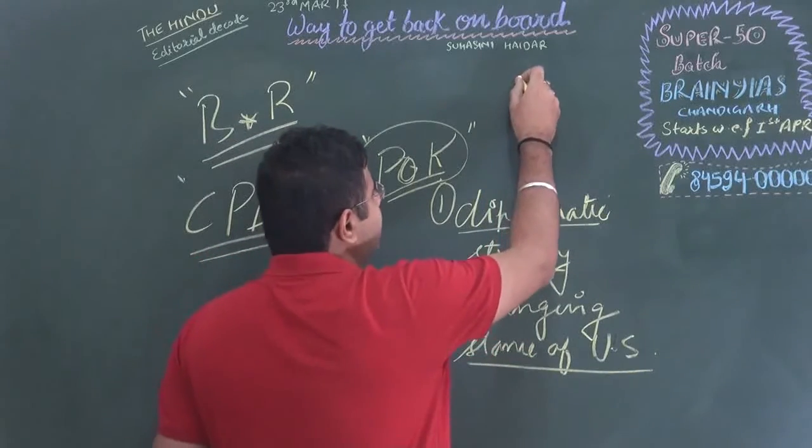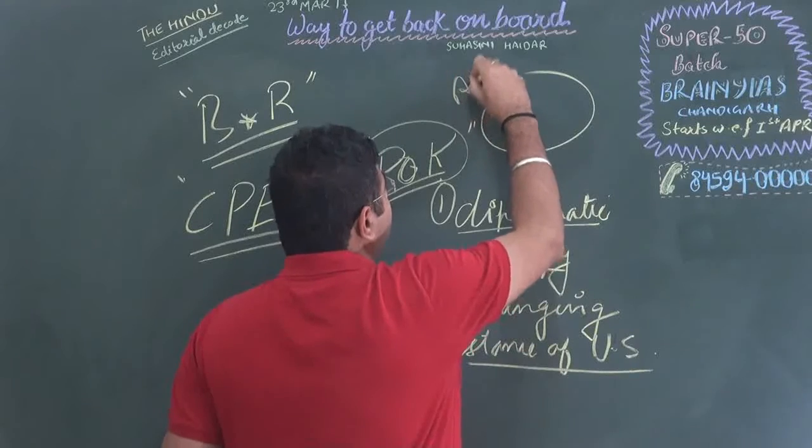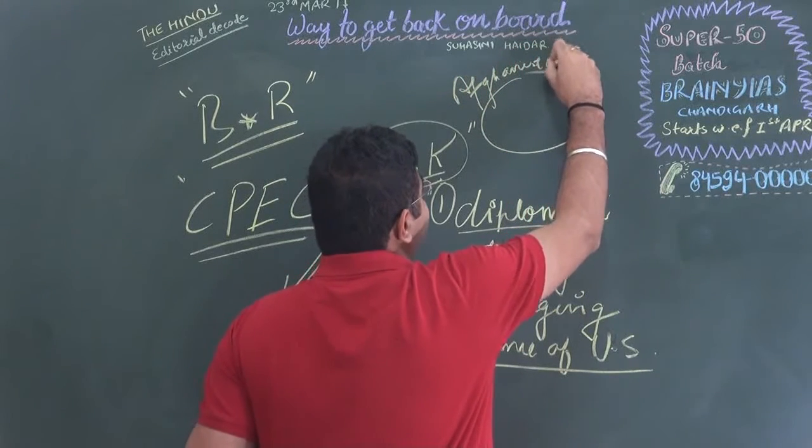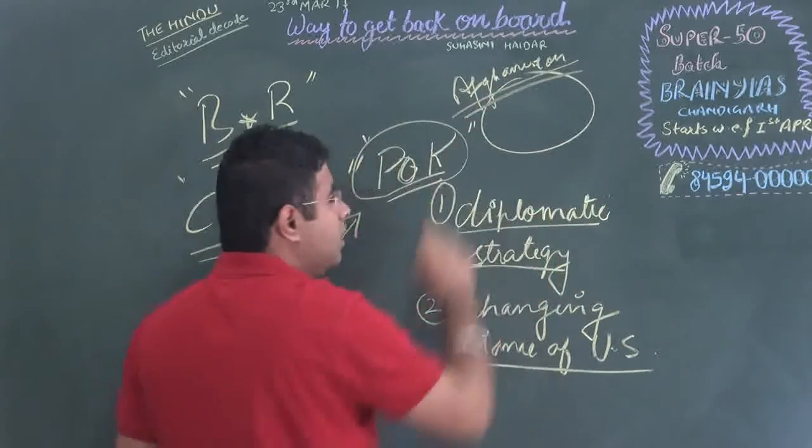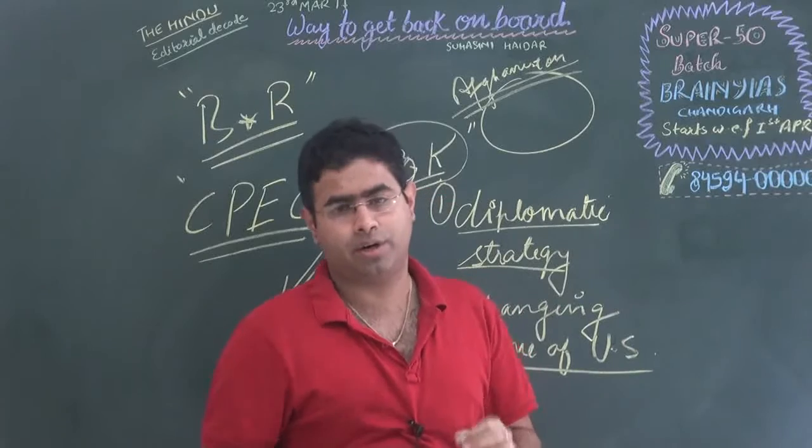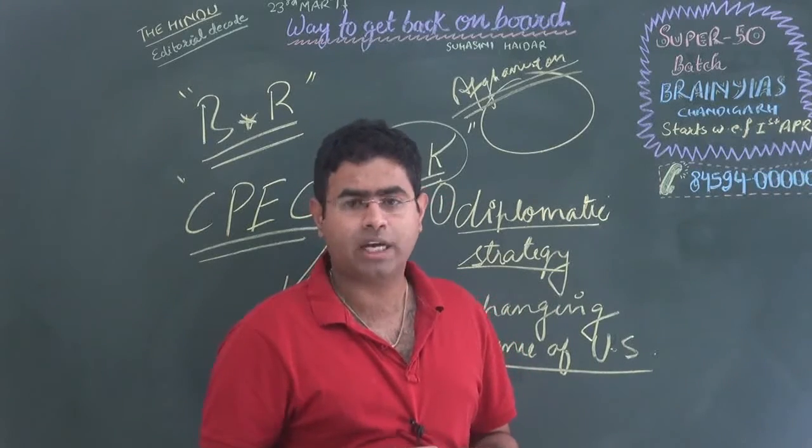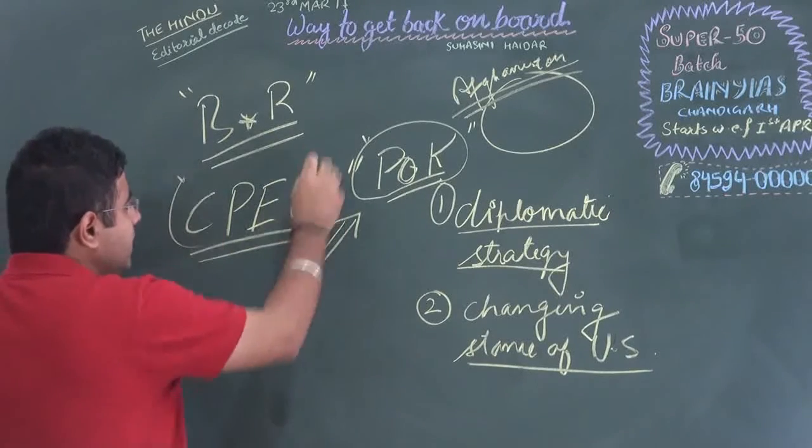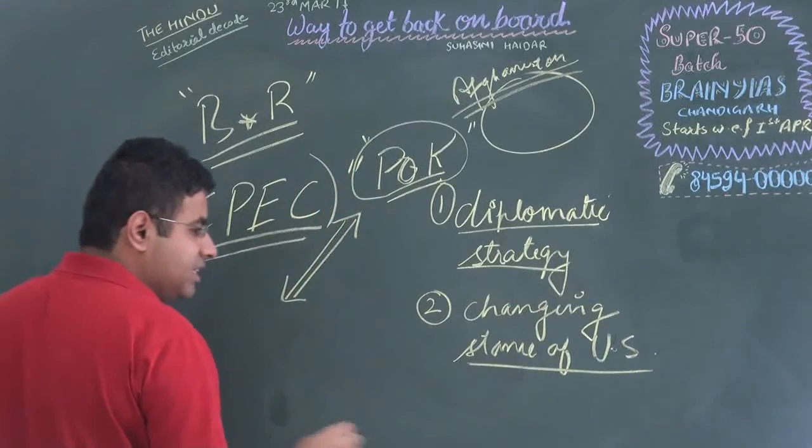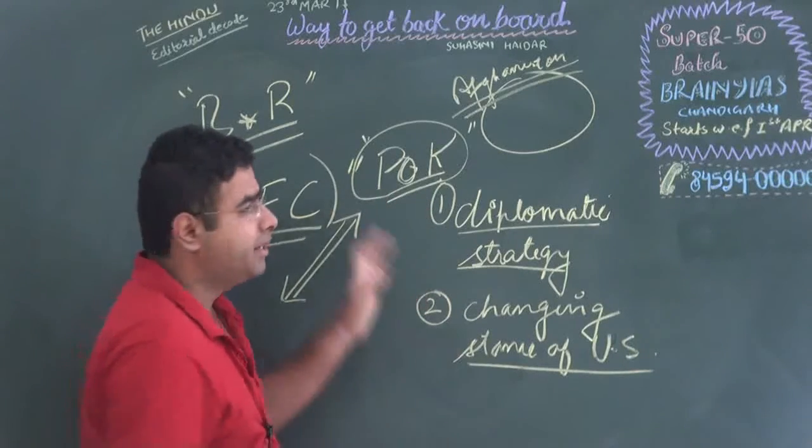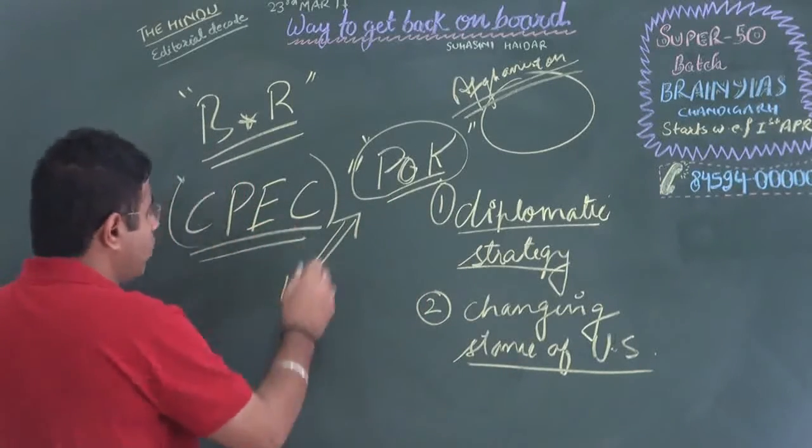Now how can that be done? That can be done if India will bring Afghanistan on board. This is very important—Afghanistan on board. And Afghanistan along with India should be asserting pressure on China that this B&R project's component of CPEC, rather than passing through Pakistan Occupied Kashmir, it should be passing through Afghanistan.